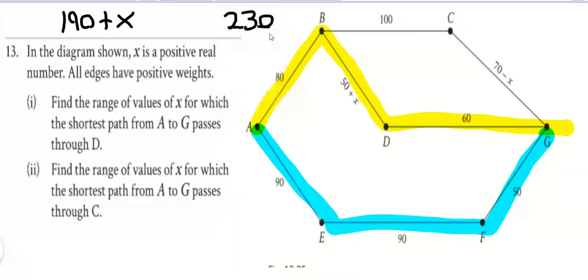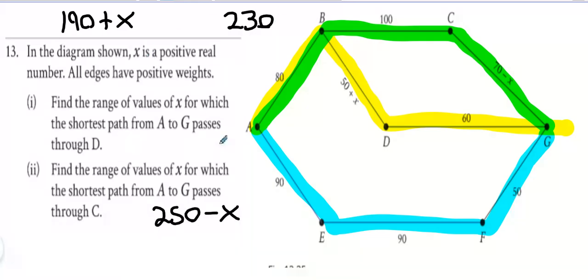Is everybody happy to have the number for all three routes? I want the yellow route to be the best, has to be the best. What does that mean? It has to be smaller than 230. What x value would cause that to be smaller than 230? x less than 40.